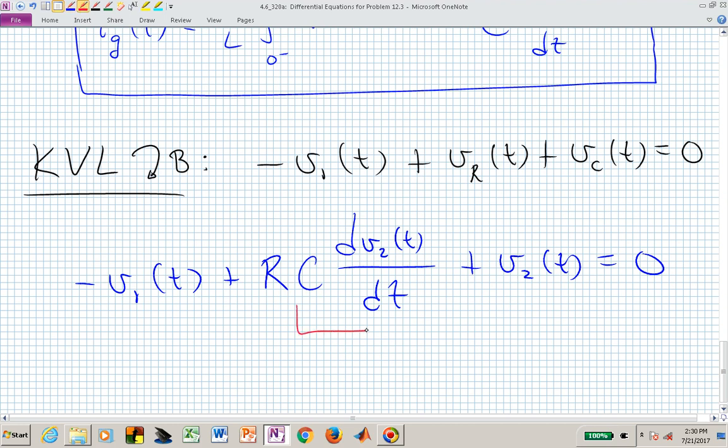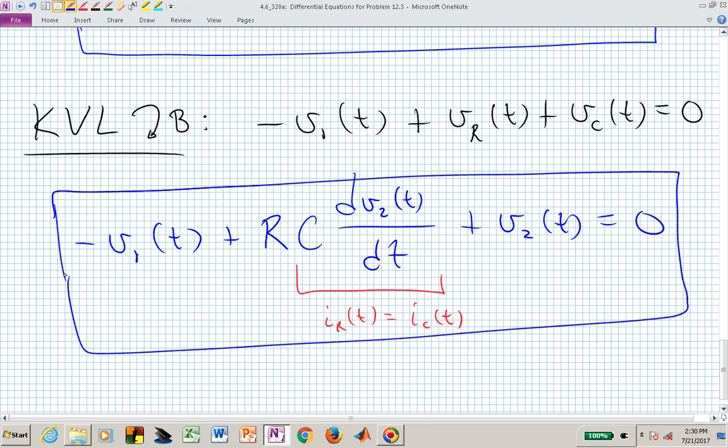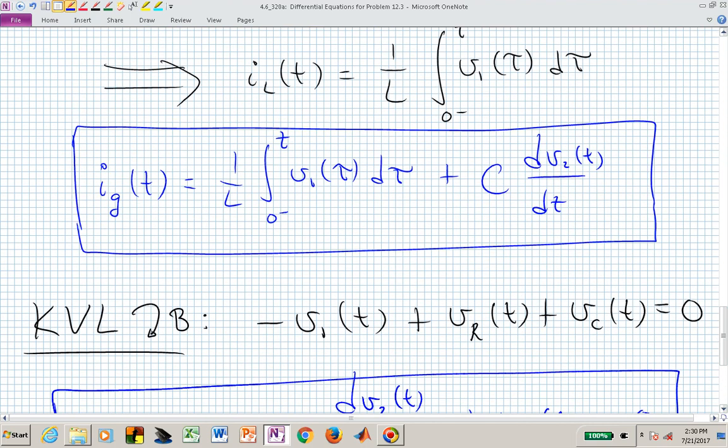Again, what we're using here is the fact that I sub R of T is equal to I sub C of T. And I sub C of T from ICE allows us now to write this second governing relationship between V sub 1 and V sub 2, or coupled a set of equations to couple this boxed equation with that boxed equation. And now we have our differential equations associated with that RLC circuit.